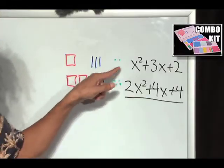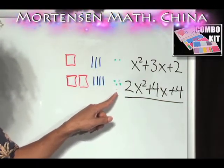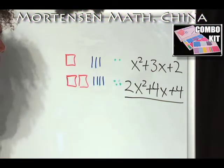Here's my x squared, 3x and 2, here's my 2x squared, 4x and 4, and all I've got to do is add them together.